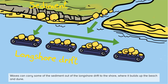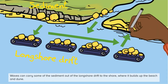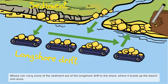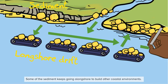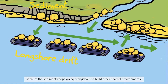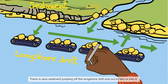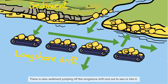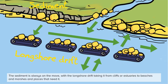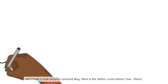Waves can carry some of the sediment out of the longshore drift to the shore, where it builds up beaches and dunes. Some of the sediment keeps going along the shore to build other coastal environments. There is also sediment jumping off the longshore drift and out to sea, or into it. The sediment is always on the move, with the longshore drift taking it from cliffs or estuaries to beaches and marshes and places that need it.